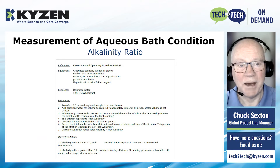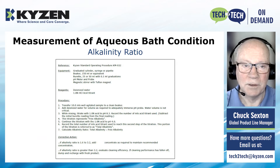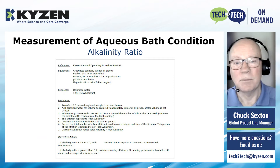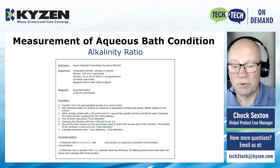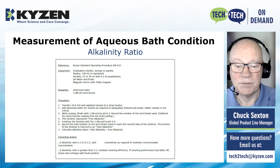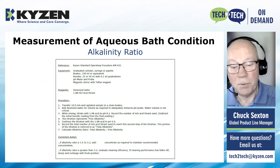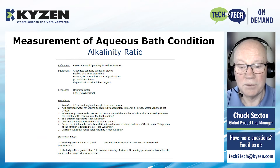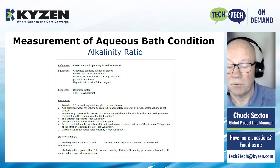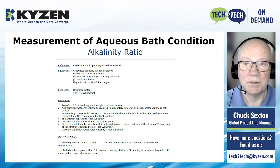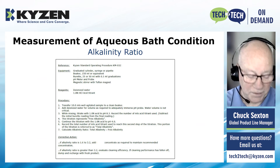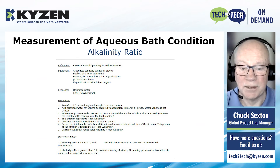This slide addresses bath condition — what we're trying to do here is predict end of bath life. One good method, and probably the best, is the alkalinity ratio, where we titrate down to a pH of 8.3, and then we titrate down to a pH of 4 — so it's a double titration. We take the values of both titrations and create a ratio called an alkalinity ratio, which we relate to your particular process. These are pretty accurate; we can usually determine when your bath is just about at its end of life.